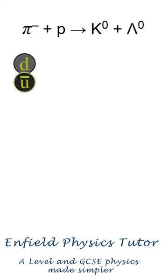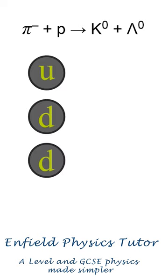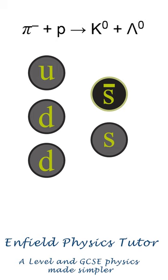Writing this out gives us d anti-u plus uud goes to make, well, something. One of the u's and the anti-u cancel out, leaving us with d plus ud to combine with a strange and an anti-strange.